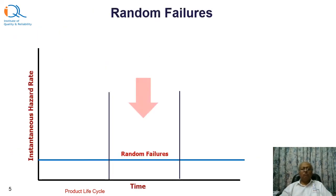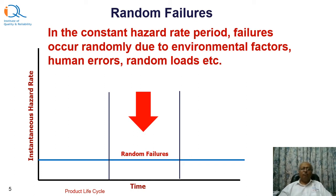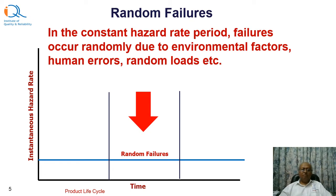Let us look at the random failures. Random failures occur later on and are caused by environmental factors, human errors, random loads, etc. As you can see, the hazard rate during this period is constant.